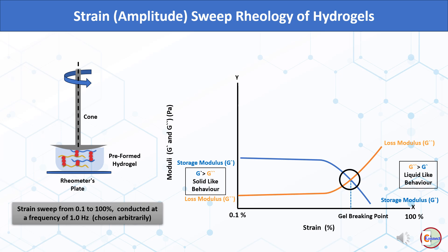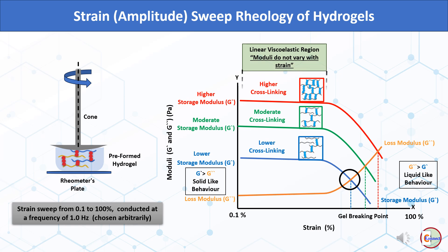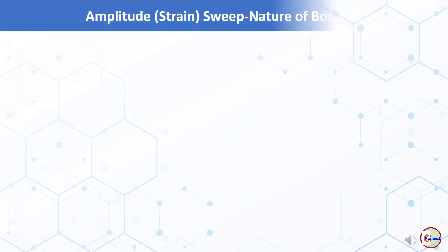Another important finding from strain sweep is the correlation of cross-linking density with storage modulus. Cross-linking density induces solid-like properties, reflected by increased storage modulus with increased cross-linking density. As solid-like properties increase, the gel breaking point also increases. The strain sweep rheogram also shows a range of strain where both moduli do not vary — this region is known as the linear viscoelastic region, indicating the stability of the hydrogel within that strain range.